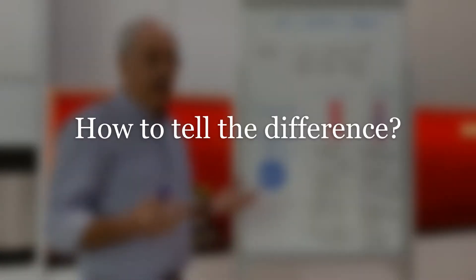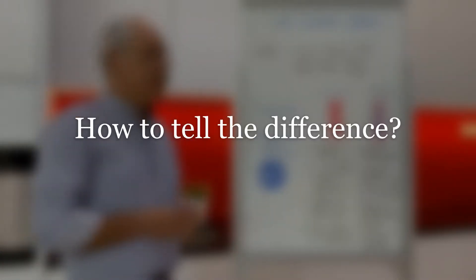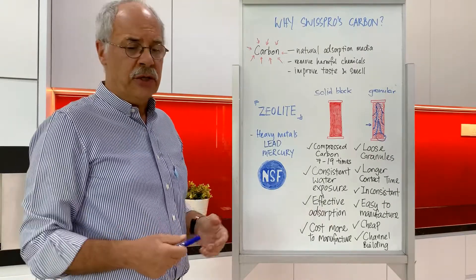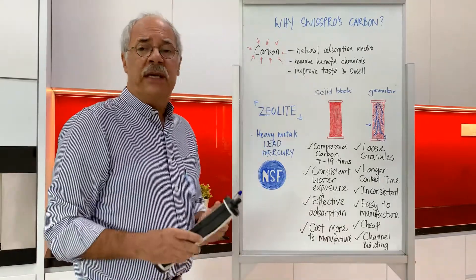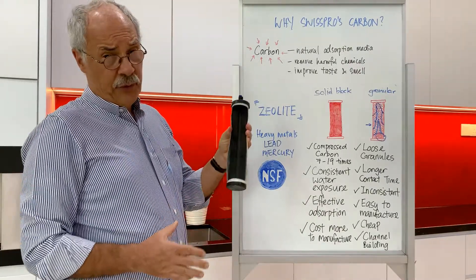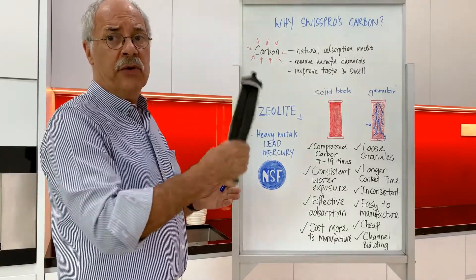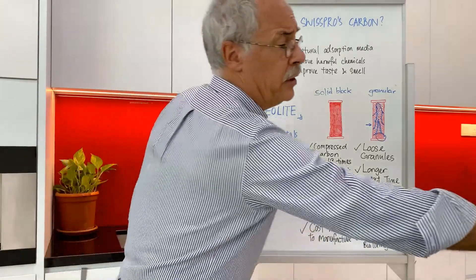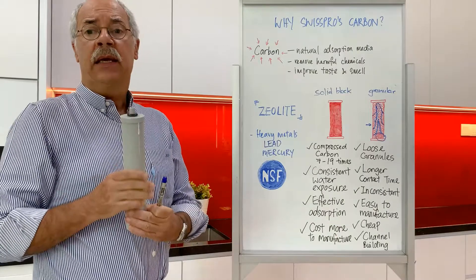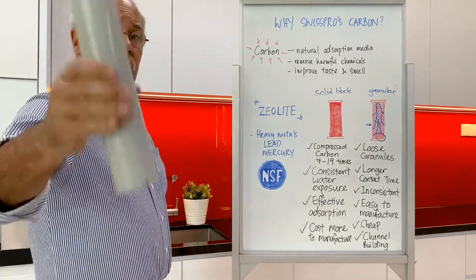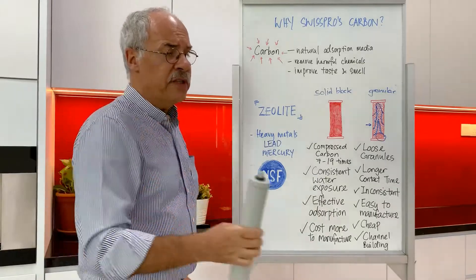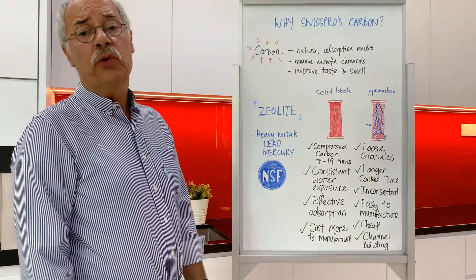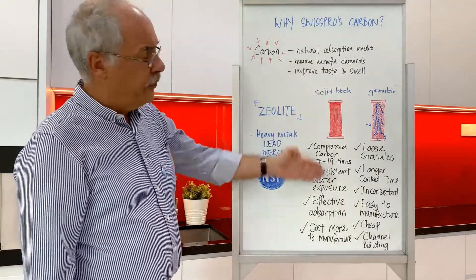How would you be able to tell whether you have a granular or a carbon block? Very simple — by shaking. If you have a quality carbon block and you shake it, of course there's no sound; it's all compact. However, if you have a granular carbon and shake it, you will simply hear a sound, which means it is loose carbon and not of the same quality.